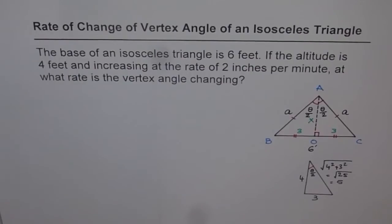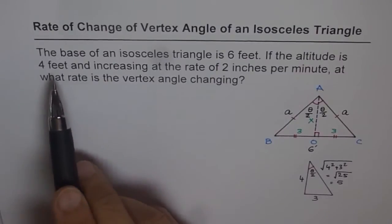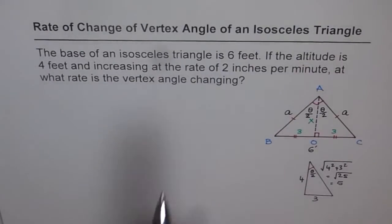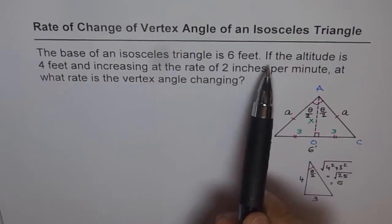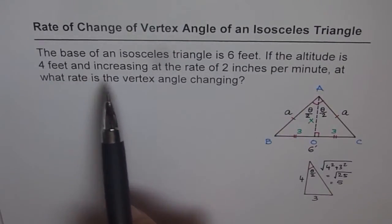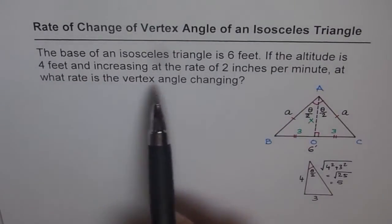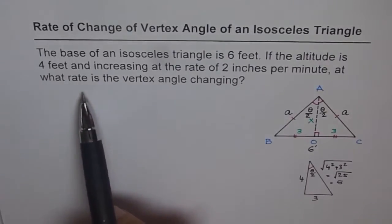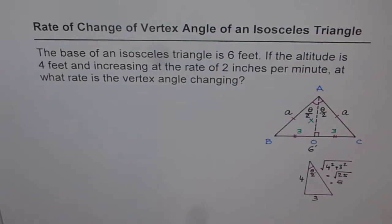Rate of change of vertex angle of an isosceles triangle. The question is: the base of an isosceles triangle is 6 feet. If the altitude is 4 feet and increasing at the rate of 2 inches per minute, at what rate is the vertex angle changing?